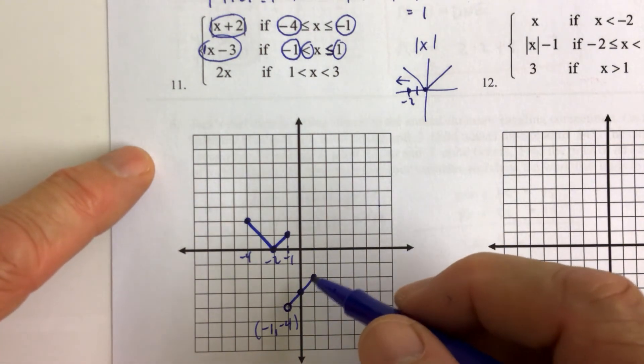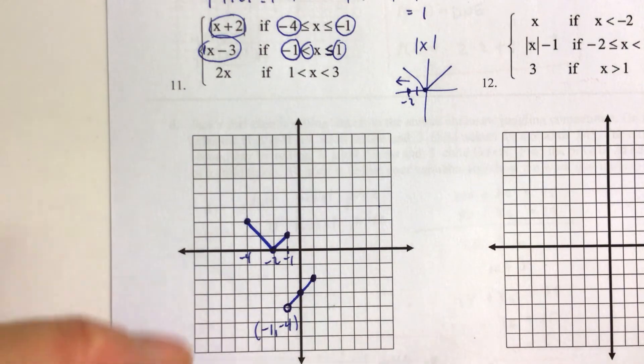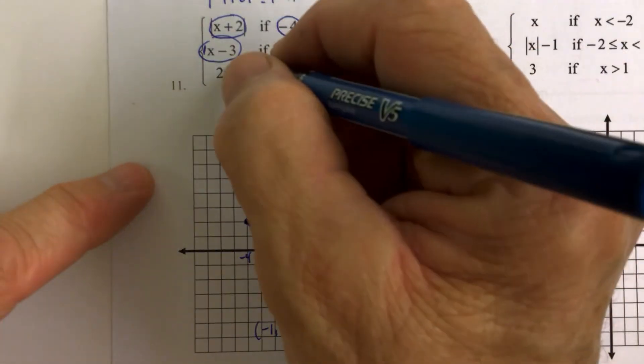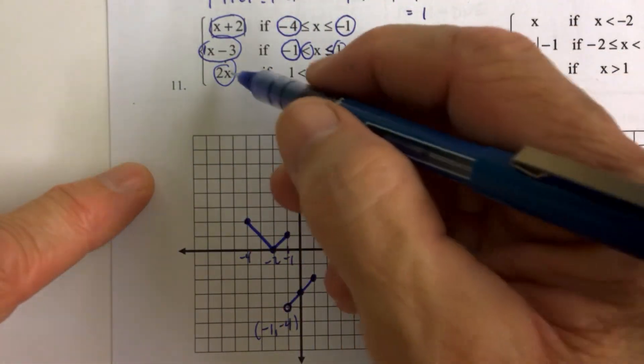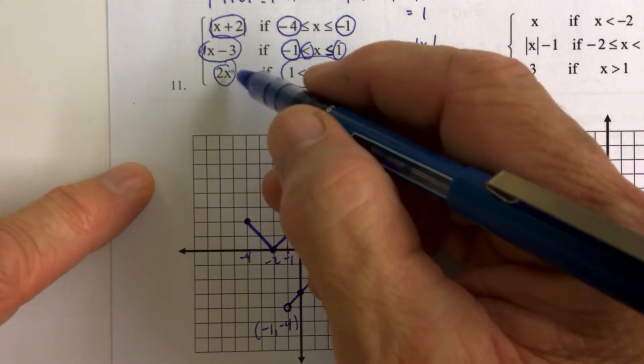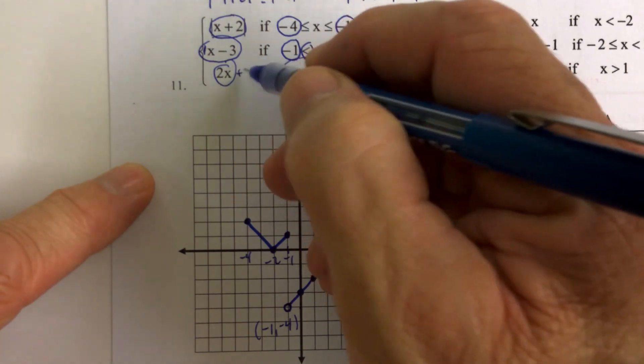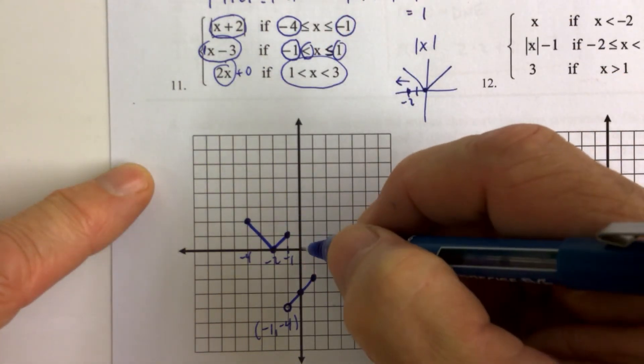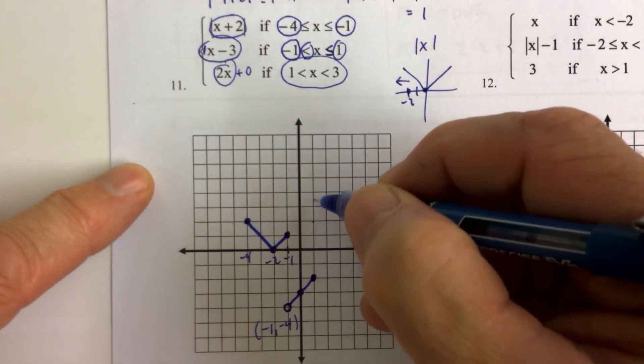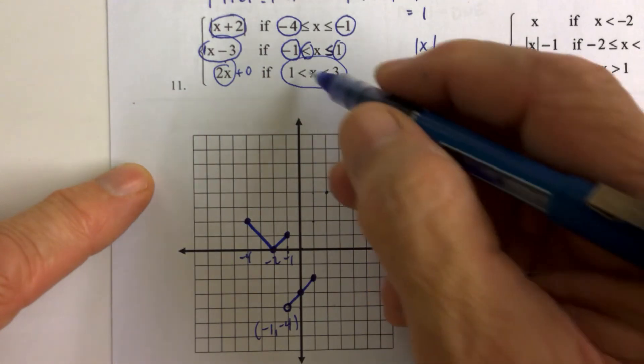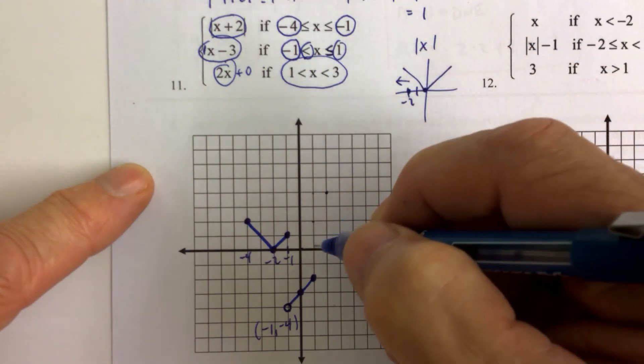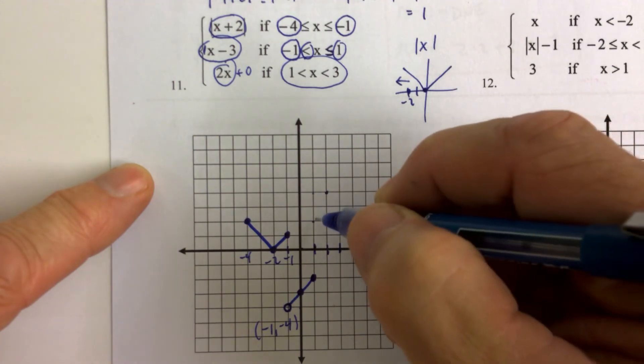And then the third piece we see is also linear, which would, if we didn't have any domain restrictions, then we would say, Okay, this function here goes through, has a y-intercept of 0, has a slope of up 2 and over 1, up 2 and over 1. It's defined between 1 and 3. So here's 1, 2, and 3.